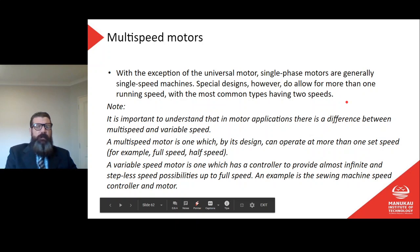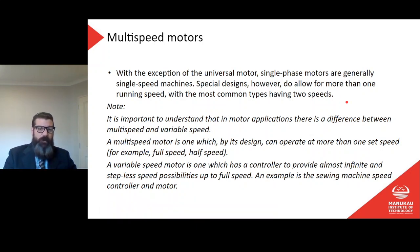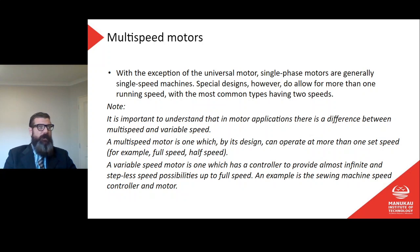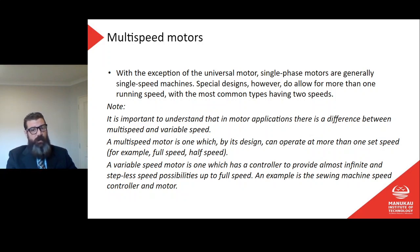Multi-speed motors: with the exception of the universal motor, single phase motors are generally single speed machines. Special designs, however, allow for more than one running speed, with the most common types having two speeds. It's important to understand the difference between multi-speed and variable speed. A multi-speed motor operates at more than one set speed by design — for example, full speed or half speed. A variable speed motor uses a controller to provide almost infinite, stepless speed possibilities up to full speed, like the sewing machine speed controller motor discussed earlier.